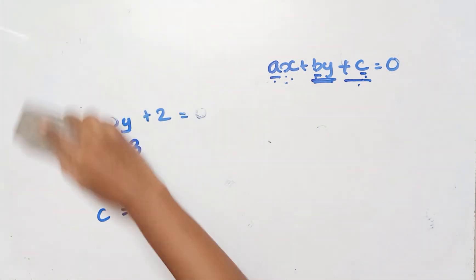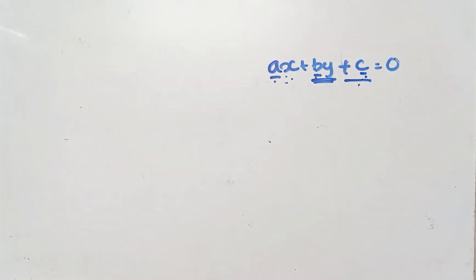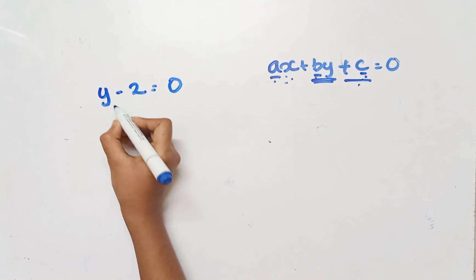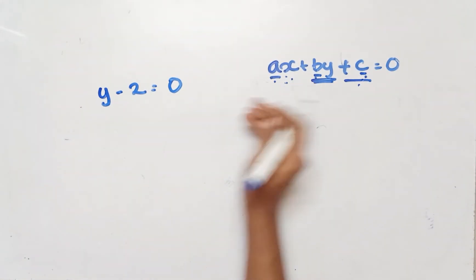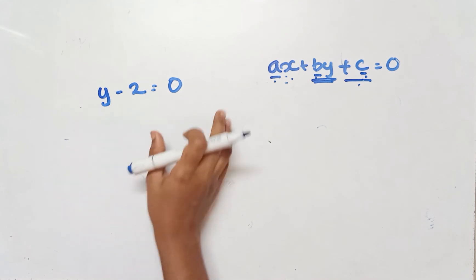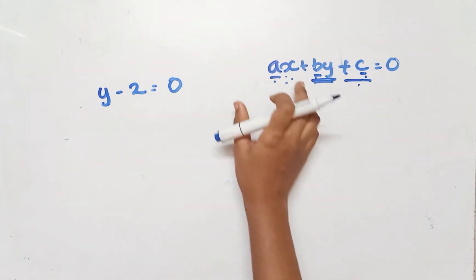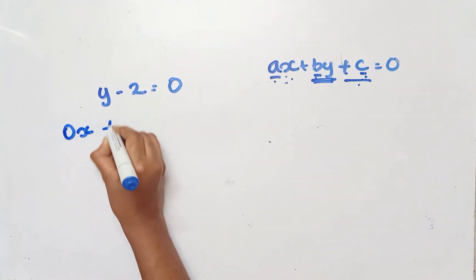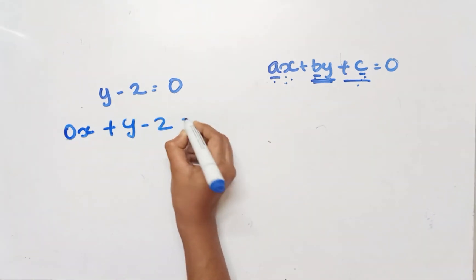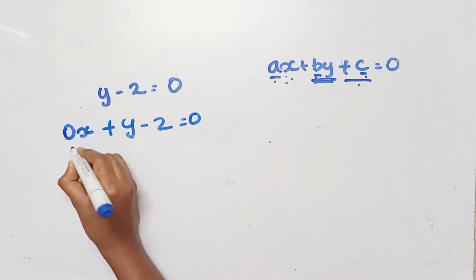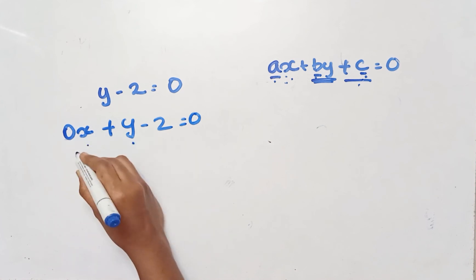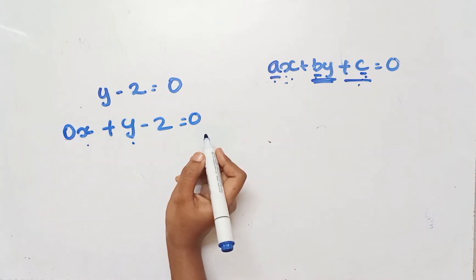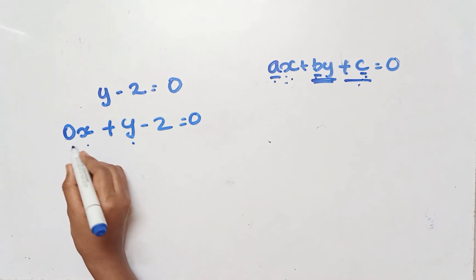Seventh sub-question: y minus 2 equals 0. There is no x term, so we write it as 0x plus y minus 2 equals 0. Therefore A equals 0, B equals 1, and C equals negative 2.